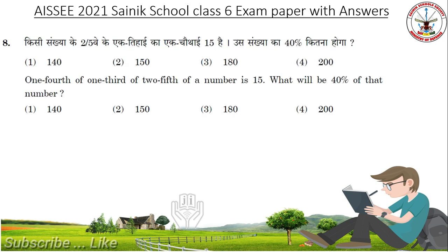Next question: 1/4th of 1/3rd of 2/5th of a number is 15. What will be 40% of that number? Options: 140, 150, 180 and 200. The answer is 180.